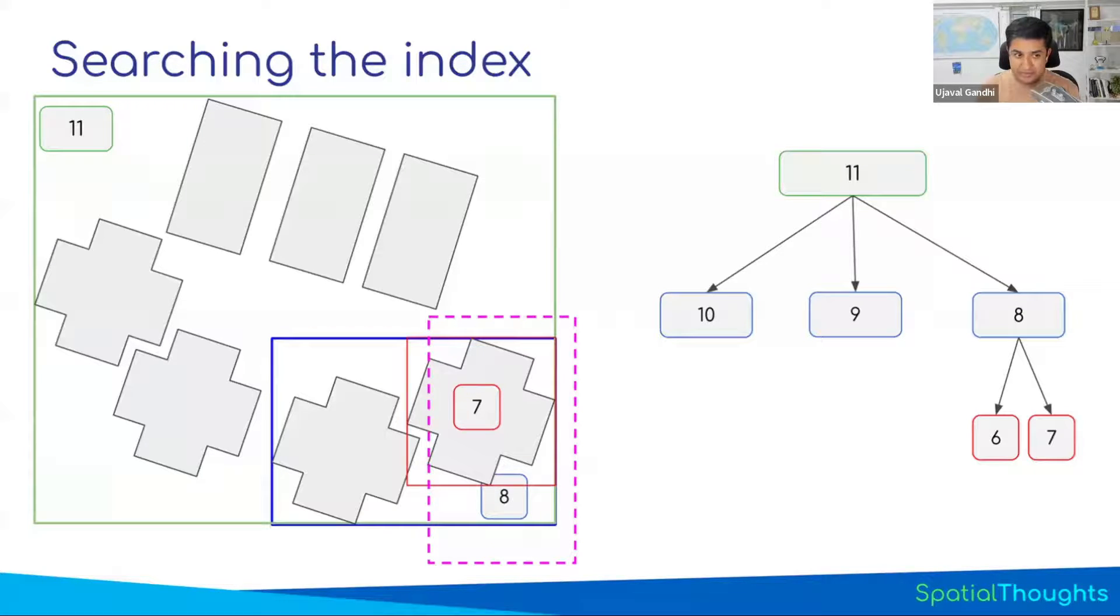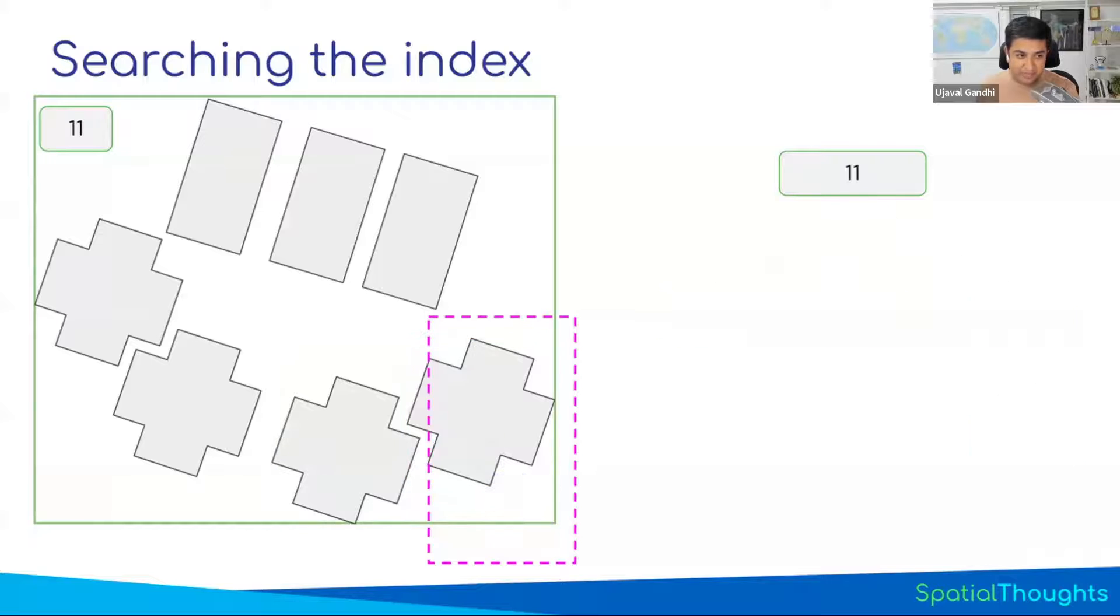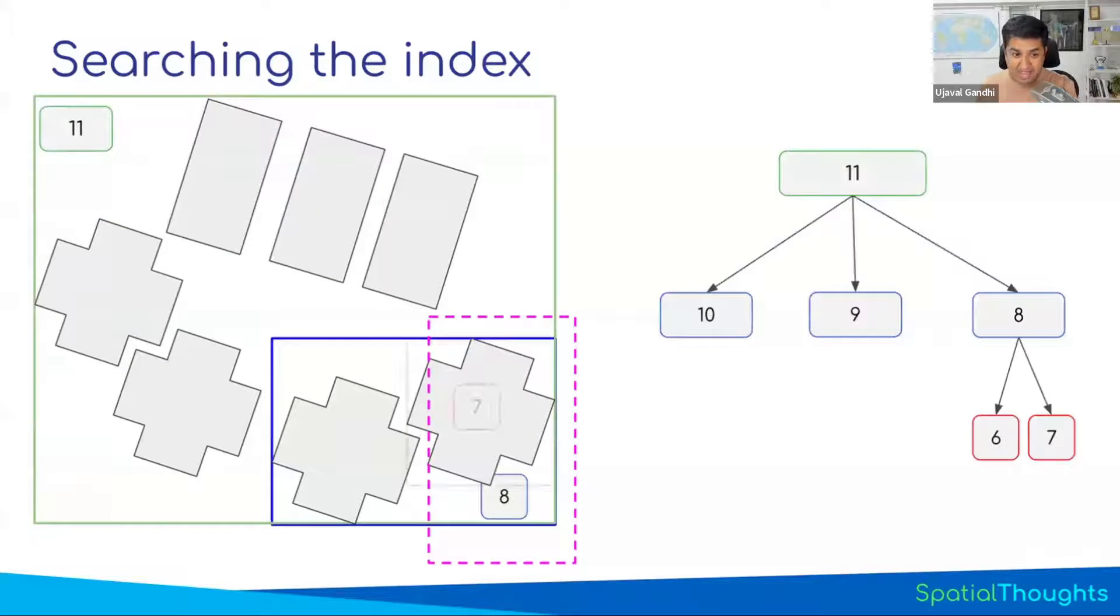So now instead of computing the 7 intersections, I could quickly just look up from the index and just say, I need to check only one, because the bounding box of only one feature intersects my bounding box. And I have now saved 7 intersection computations. And depending on the layout of your data and the operation you're trying to do, this can have a huge impact on performance. If you have an index, a lot of these operations will directly go and find the feature where it needs to compute the intersections without having to go and iterate through each of those.